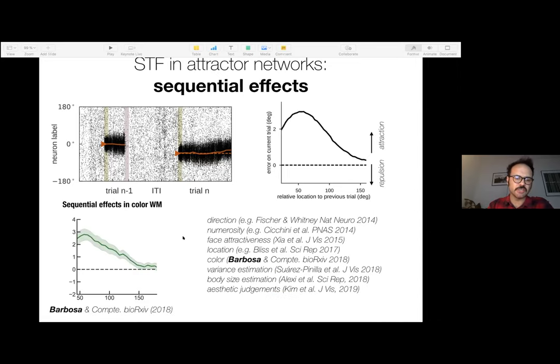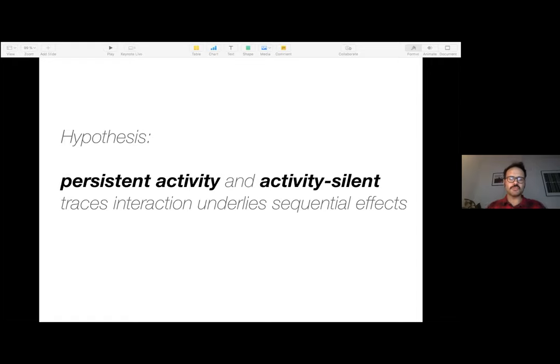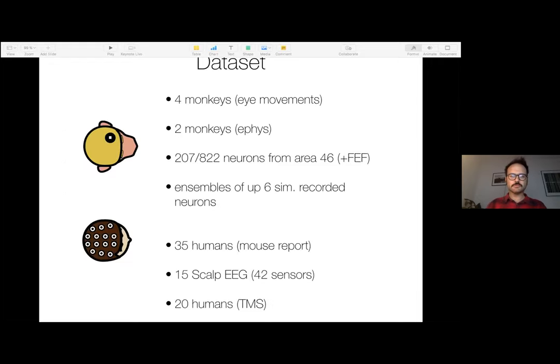And of course, this also happens in nature. So we have shown that for color, but many people before us shown that it's actually a very prominent effect in probably all working memory tasks for things like phrase attractiveness or body estimation and stuff like that. Okay. So the hypothesis that I'm going to pursue for the rest of the talk is, is this sequential effects actually a product of this interaction between persistent activity and activity silent? And in particular, do we see this reactivations that I told you about?